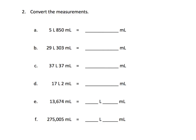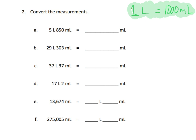So the big thing you have to remember is that 1 liter is equal to 1,000 milliliters — that's the big deal right there. That's kind of like the money shot. You've got to remember that 1 liter is equal to 1,000 milliliters, and once we've got that under our belt, everything else is pretty easy.